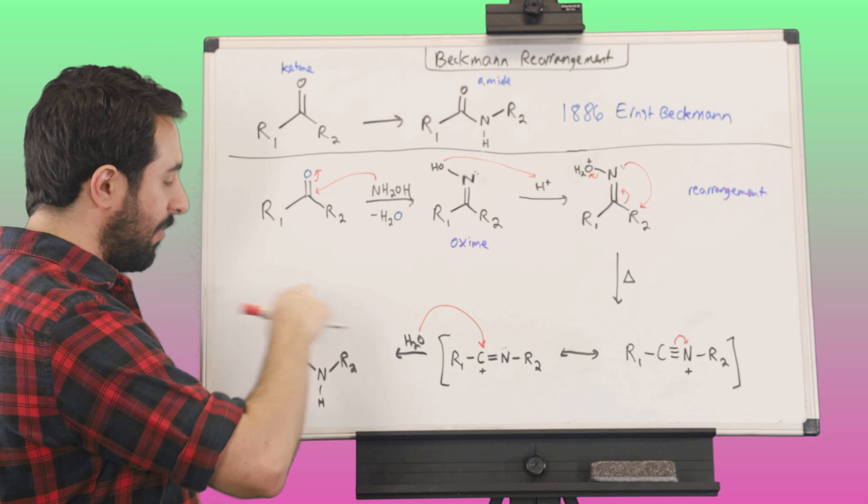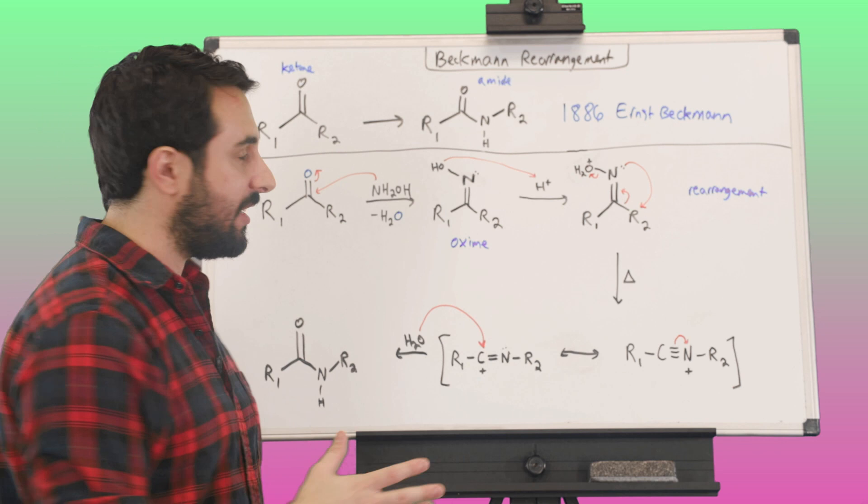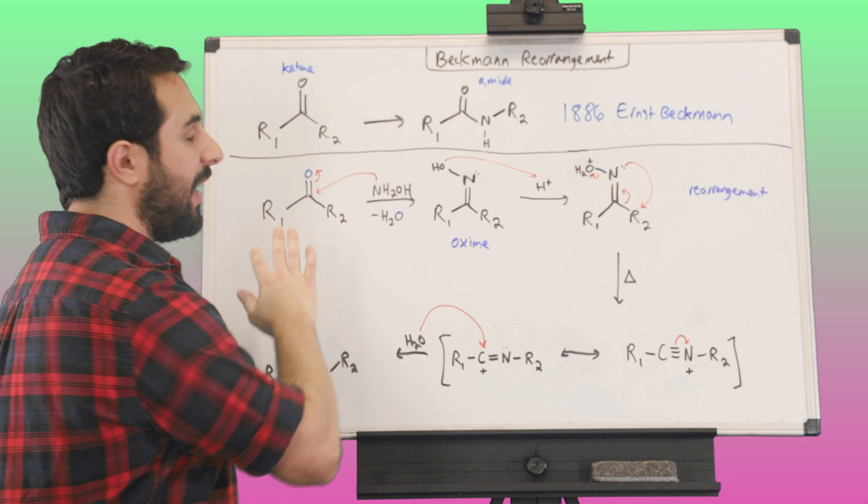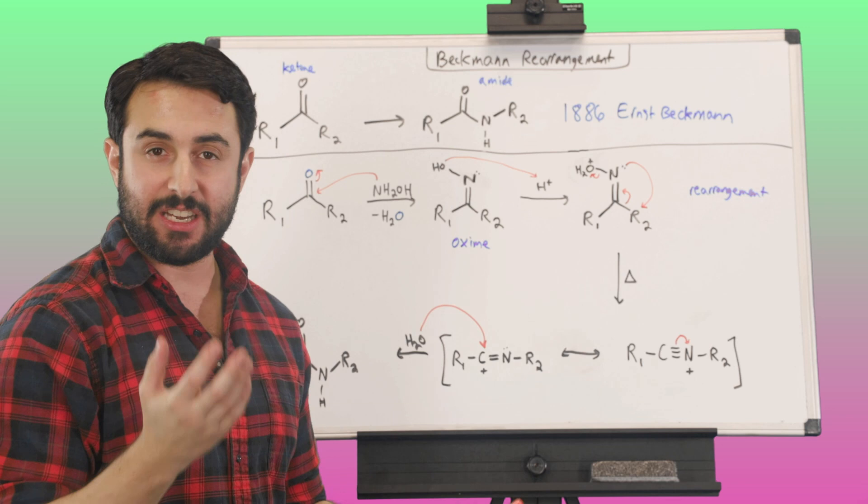Okay, so this is the very basic, most basic mechanism for the Beckman rearrangement. There is a little bit more to talk about because the thing is, if we have an asymmetric ketone, meaning two different R groups...